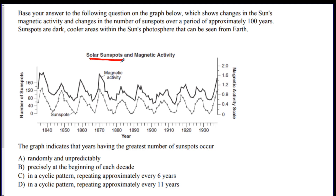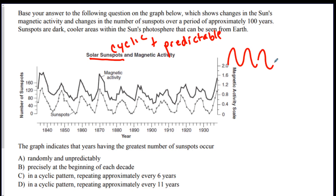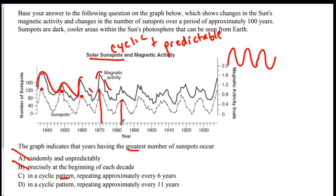Next, there's a graph about sunspots. Sunspots are cyclic and predictable — the graph goes up and down repeatedly, showing a cyclic pattern that we know will repeat. The graph indicates the greatest number of sunspots occurs in a cyclic pattern, so options suggesting otherwise are eliminated. Looking at the sunspot line, you need to figure out the time between peaks. Counting the lines, it comes out to about 11 years between each cycle, so D is the best answer.